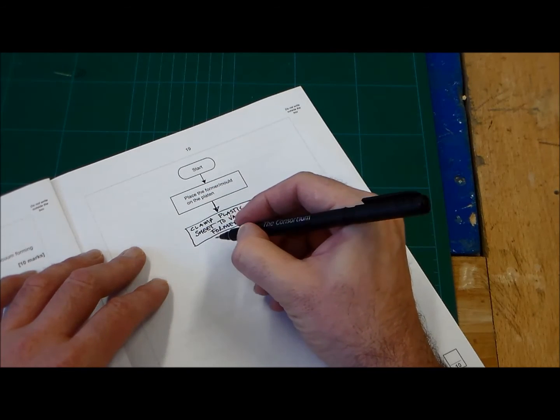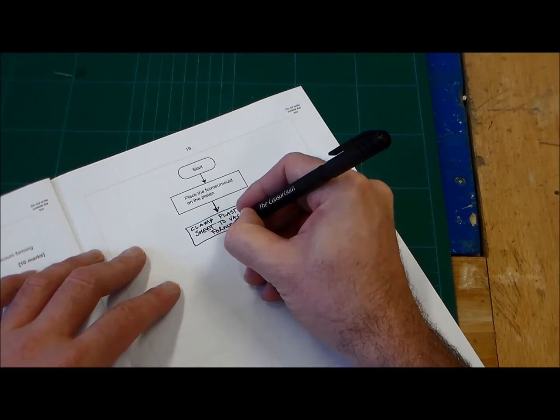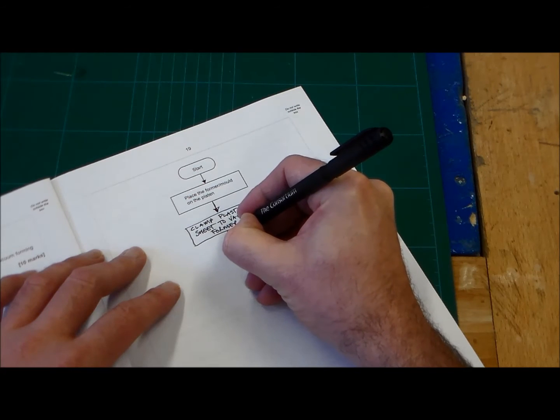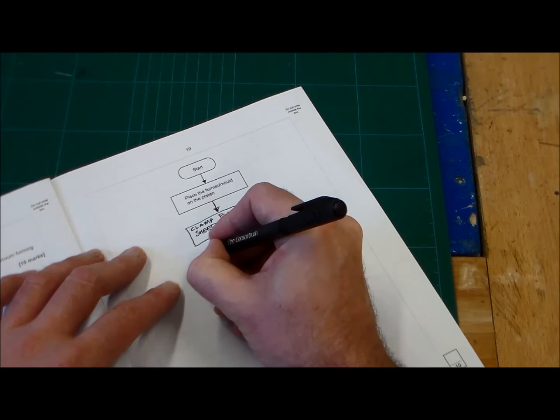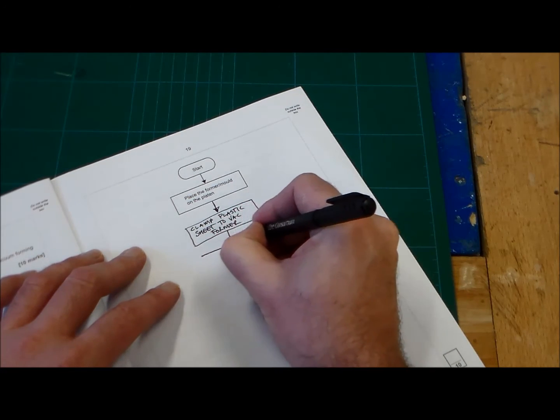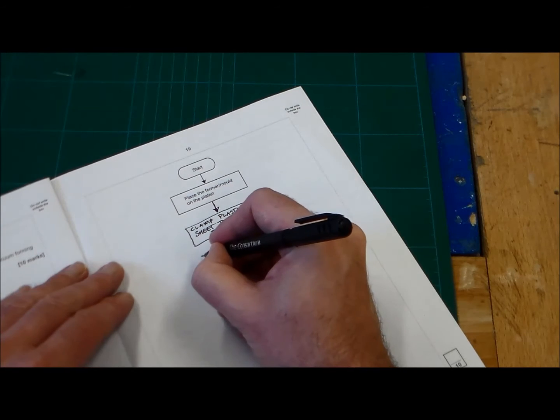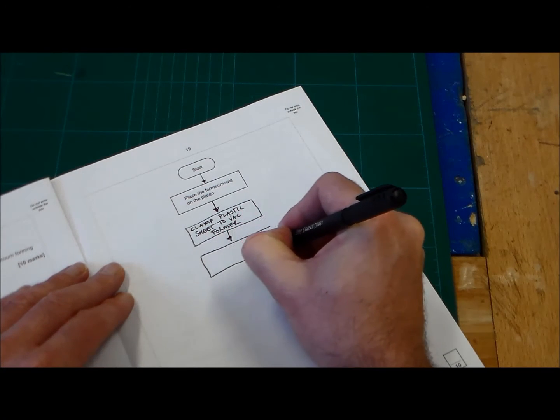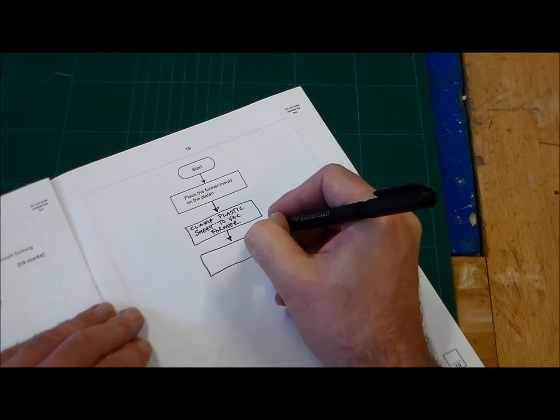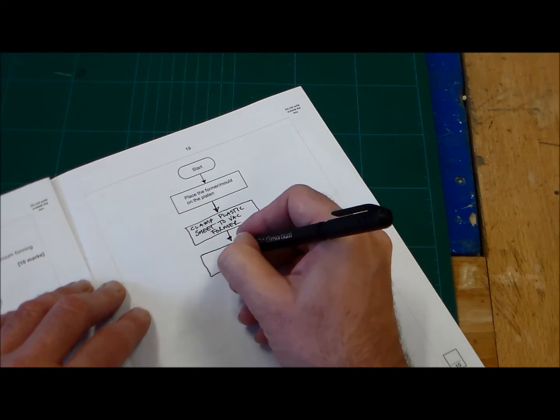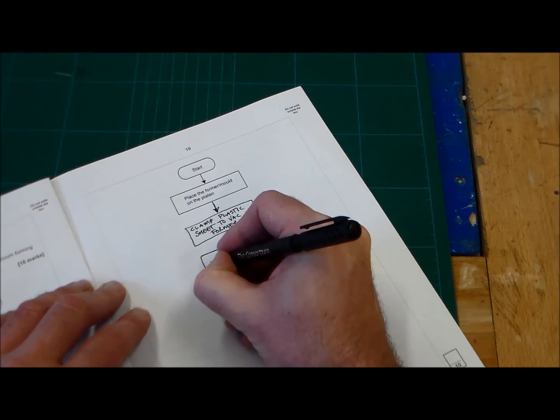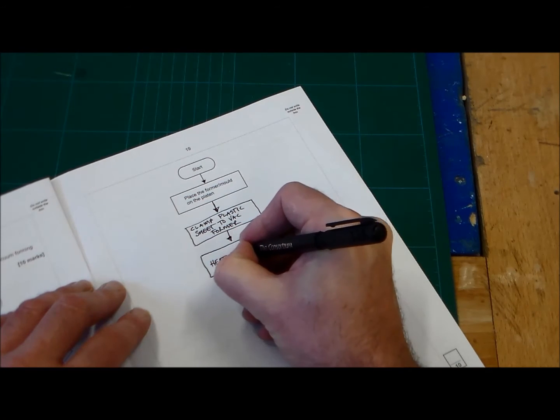Then the next one, obviously that's the heating. So another flow arrow here. Another process, keep them the same size. And this process is heat plastic sheet. So you'll be turning on the heat.